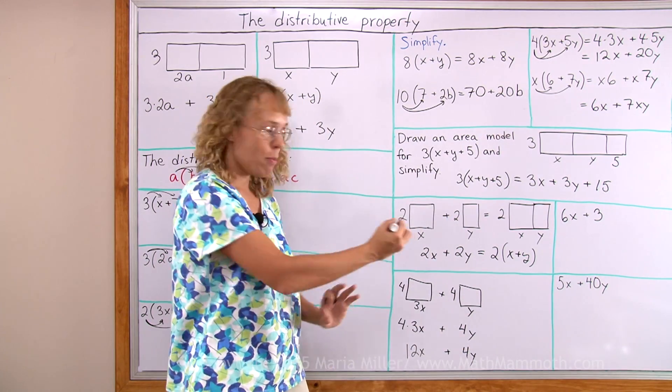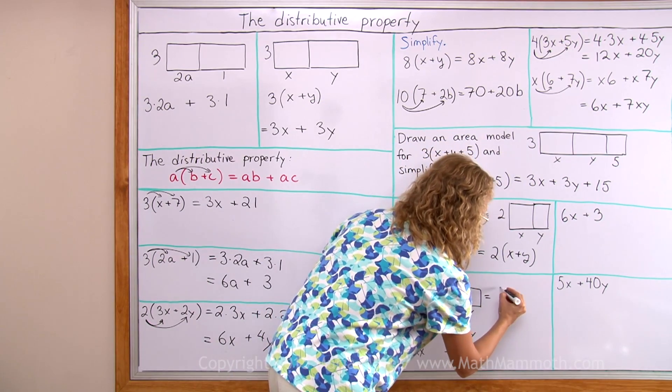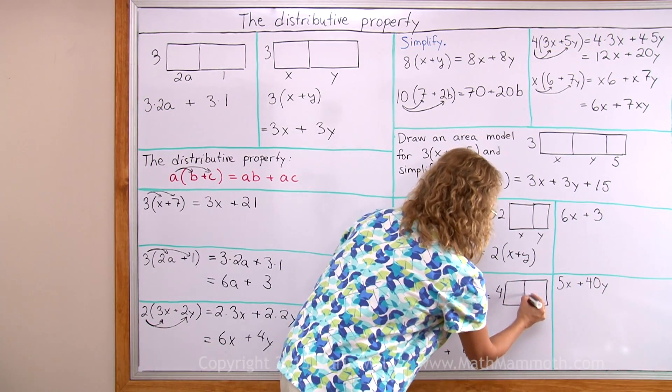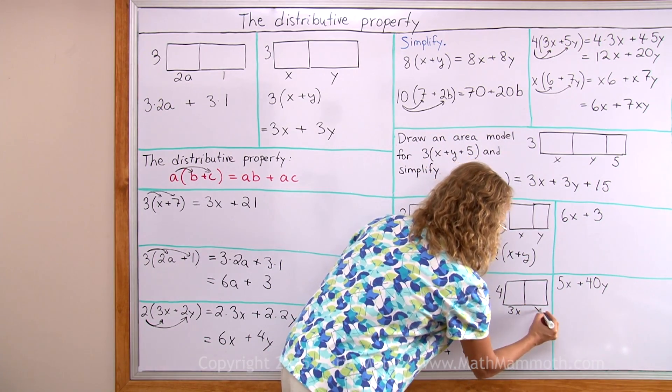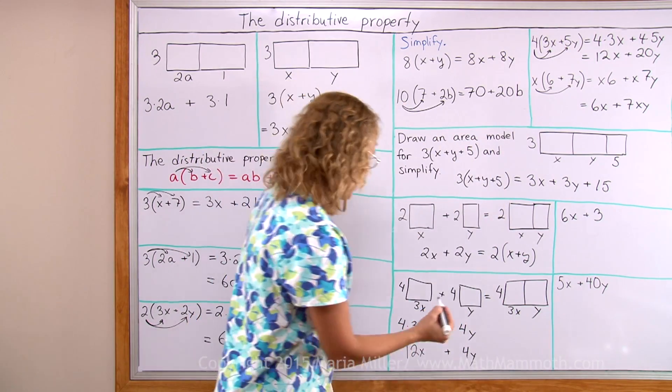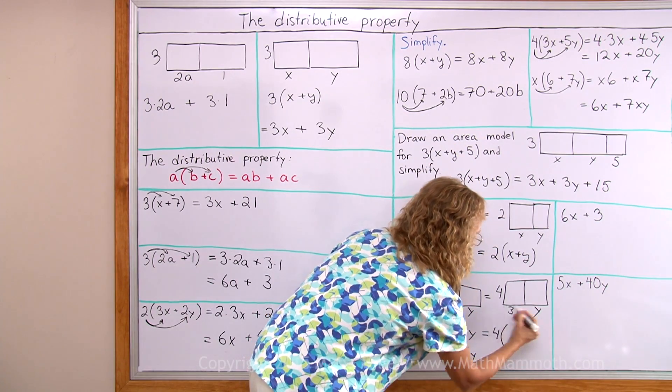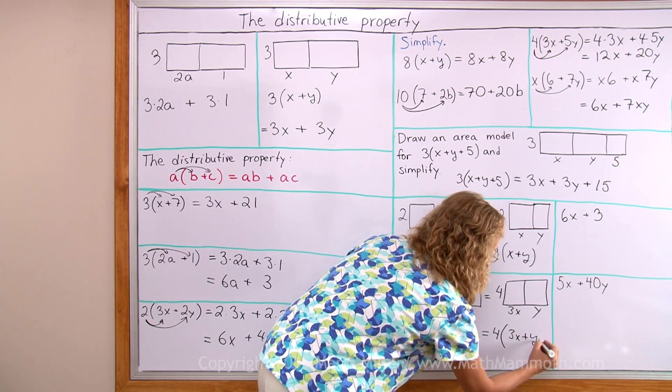Now I combine those into a big rectangle. 4 this ways, and then here's 3x and here's y. And as an expression, I get 4 times this side, which is 3x plus y.